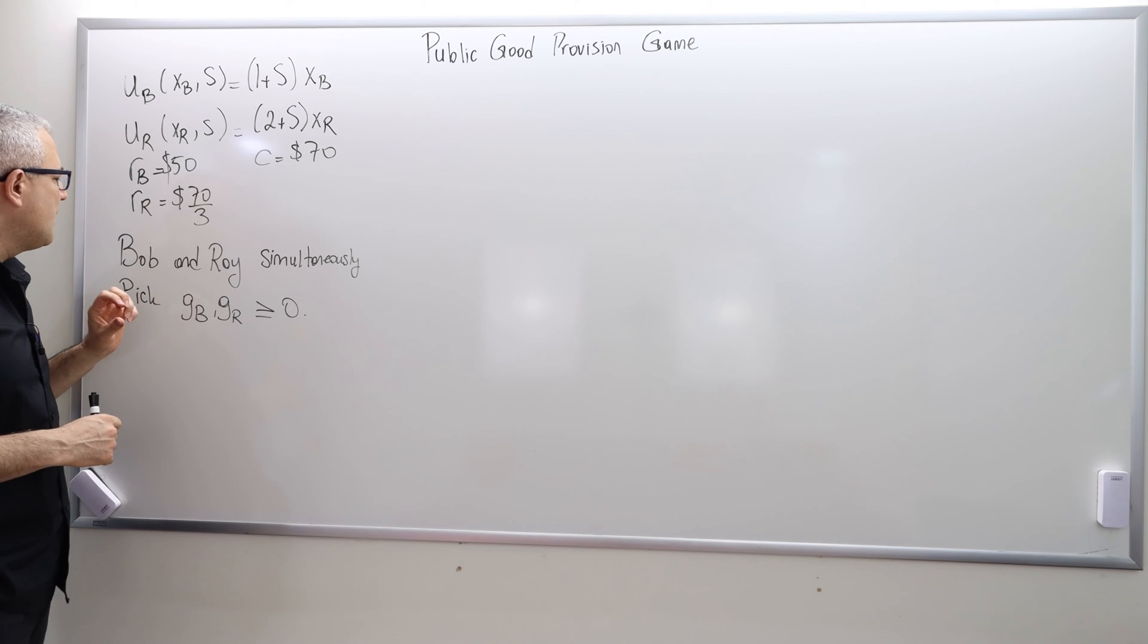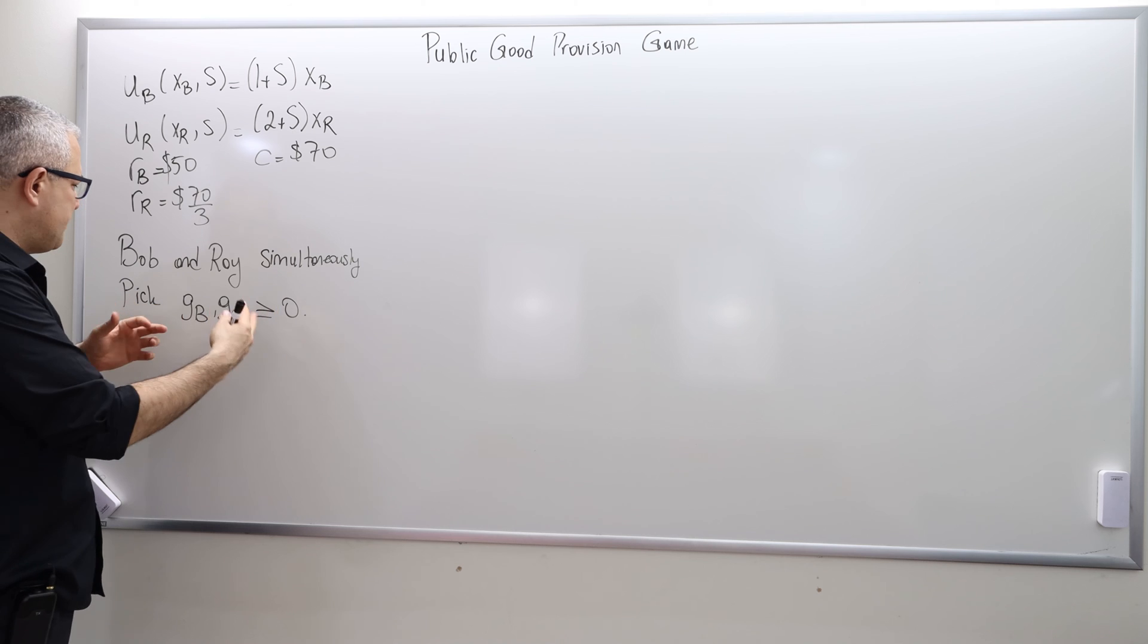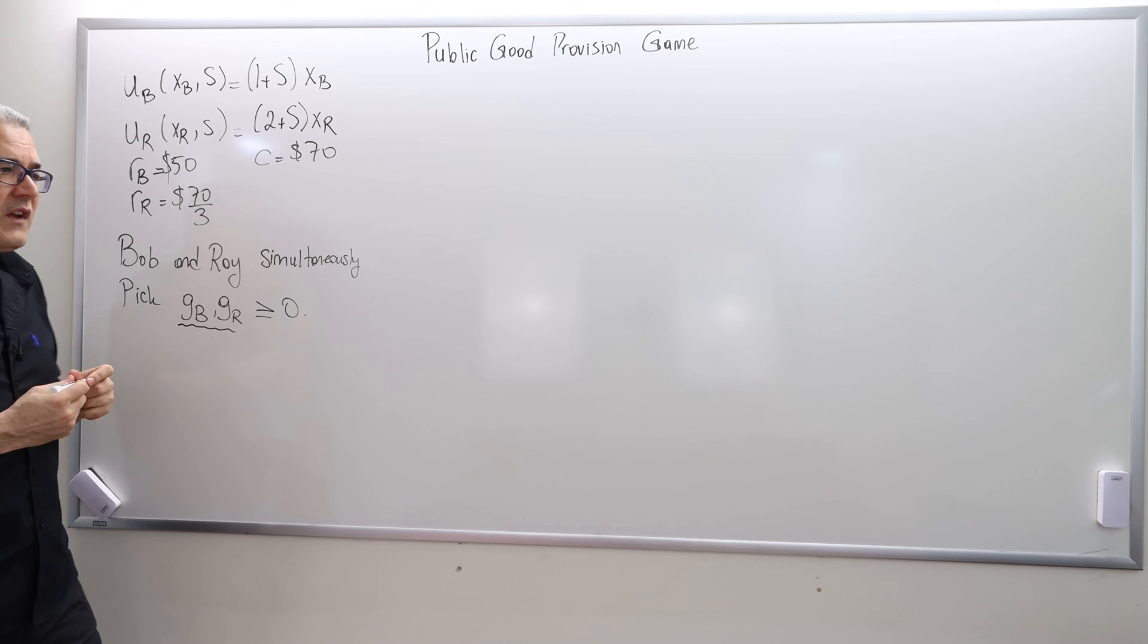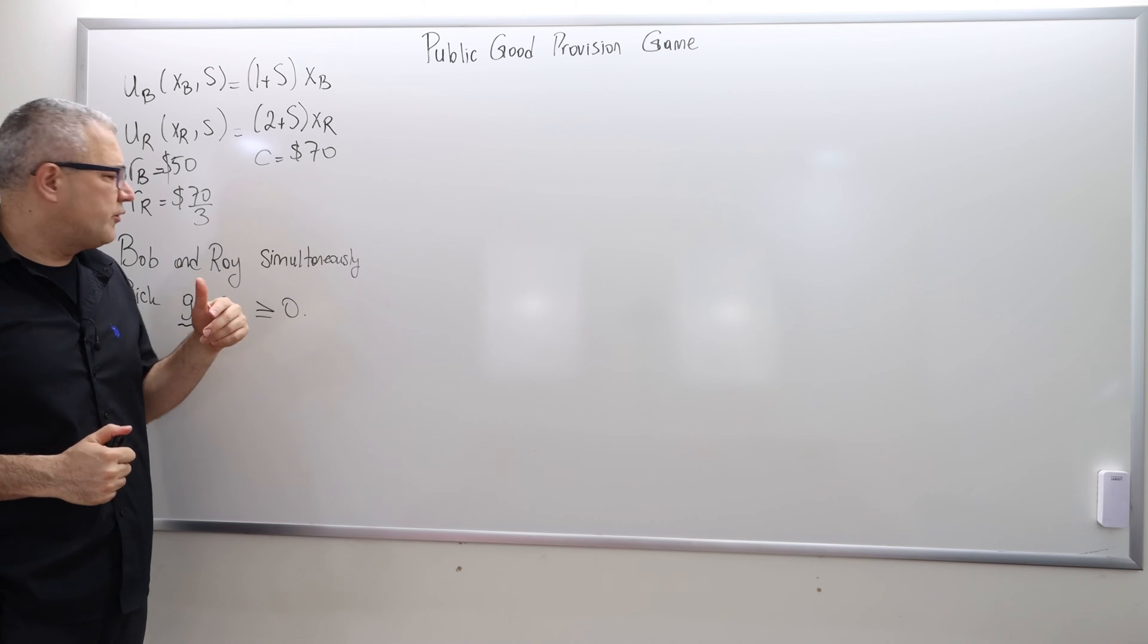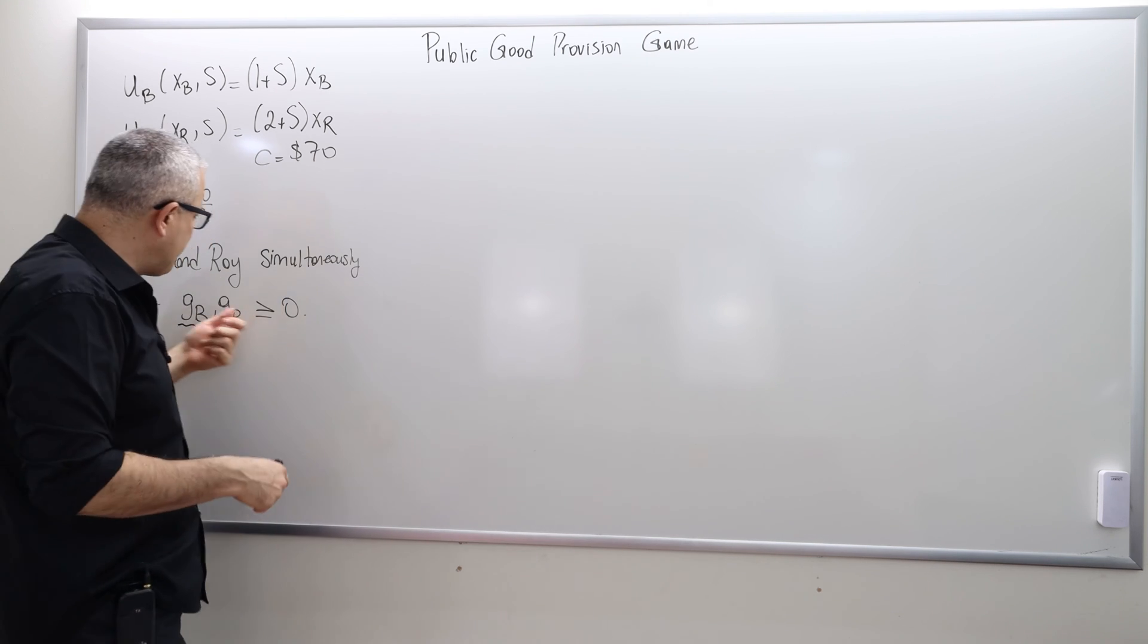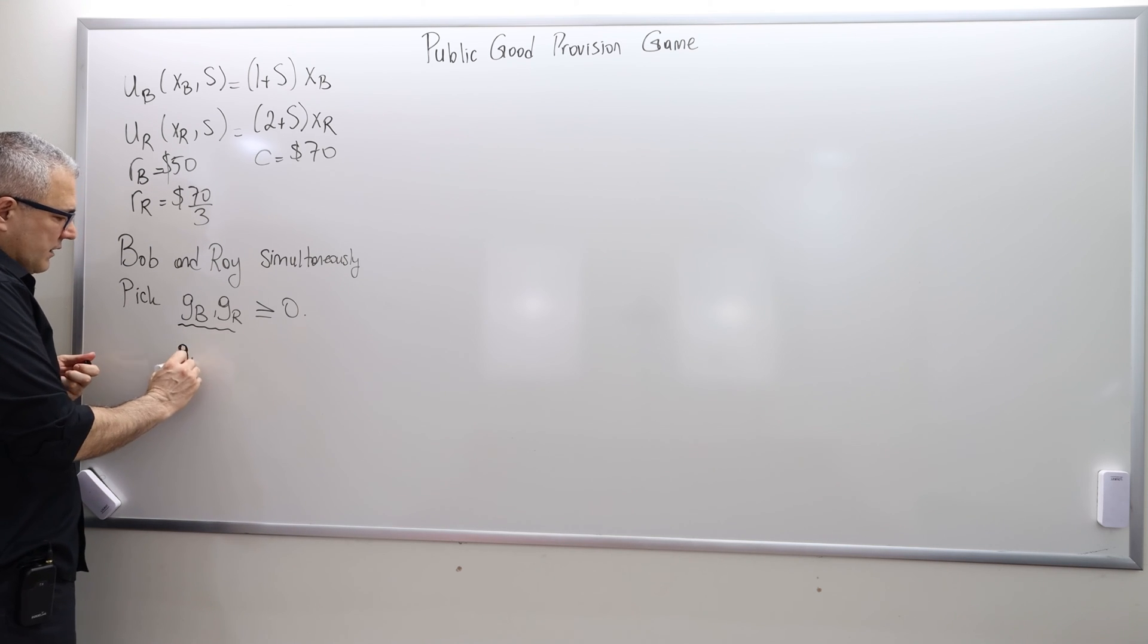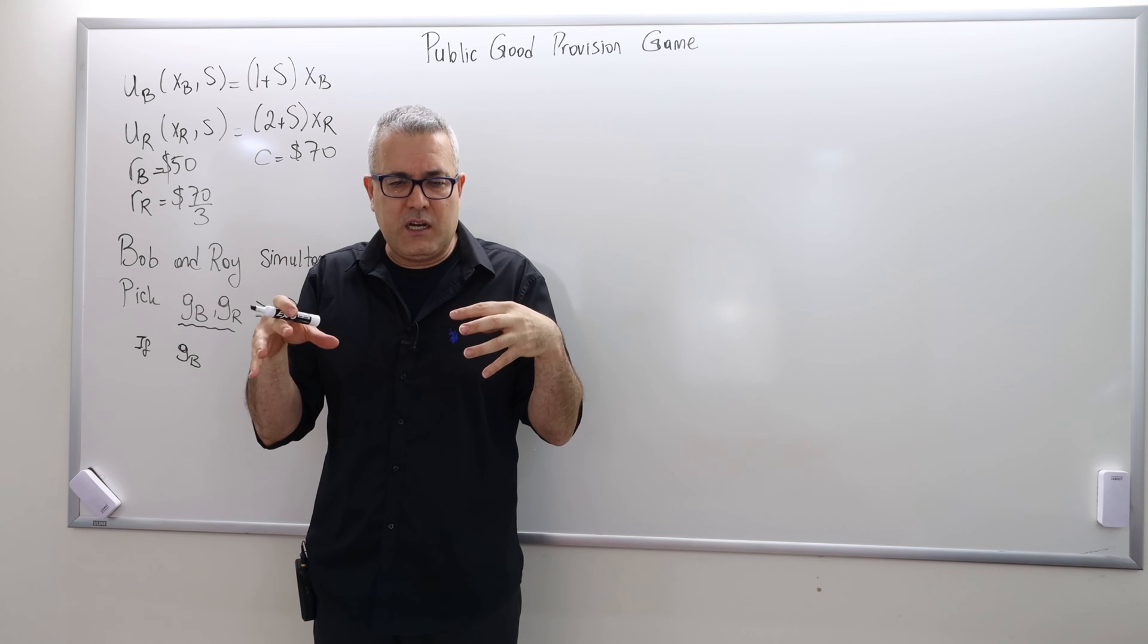And obviously the rules of the game. So this is a simultaneous move game. And the timing is there are two players, Bob and Ray. So two players simultaneously choose, they simultaneously pick a contribution. I'm going to denote the contribution G sub B, G sub R. So G sub B is how much Bob contributes towards public good, G sub R how much Ray contributes towards public good. So those numbers are some non-negative numbers, or how much money Bob pays for the sofa and how much Ray pays for the sofa.